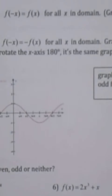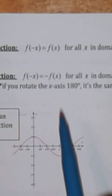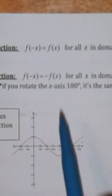Let's start the next part. An even function is defined as follows: it is a function such that f of negative x equals f of x for all x in the domain. The graph of an even function is symmetric with respect to the y-axis.